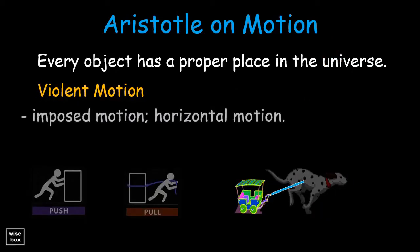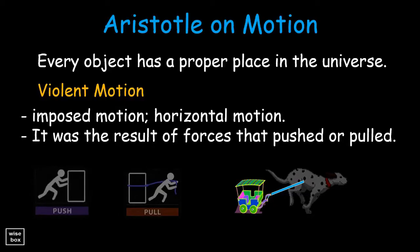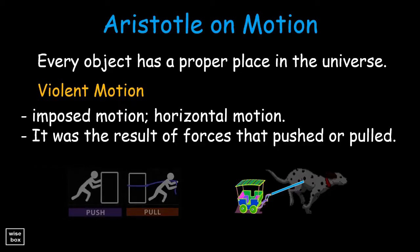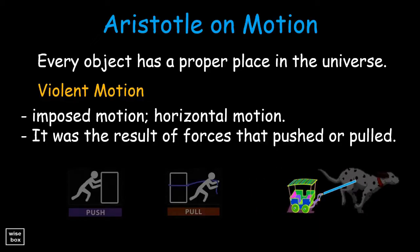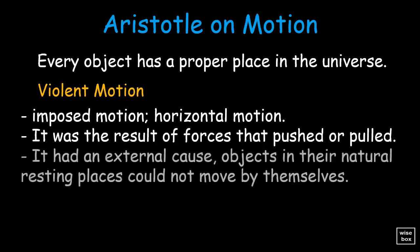Violent motion is imposed motion, or horizontal motion. It was the result of forces that pushed or pulled.